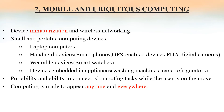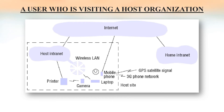Mobile computing helps devices to compute a task while the user is on the move. Ubiquitous computing is nothing but computing made to appear anytime and everywhere. Both mobile and ubiquitous computing are similar in some sense but are very distinct. Here is a diagram showing a user visiting a host organization, where the home intranet and the host intranet are connected via the internet, and the user has access to three forms of wireless connection: a laptop, a mobile phone, and a digital camera.